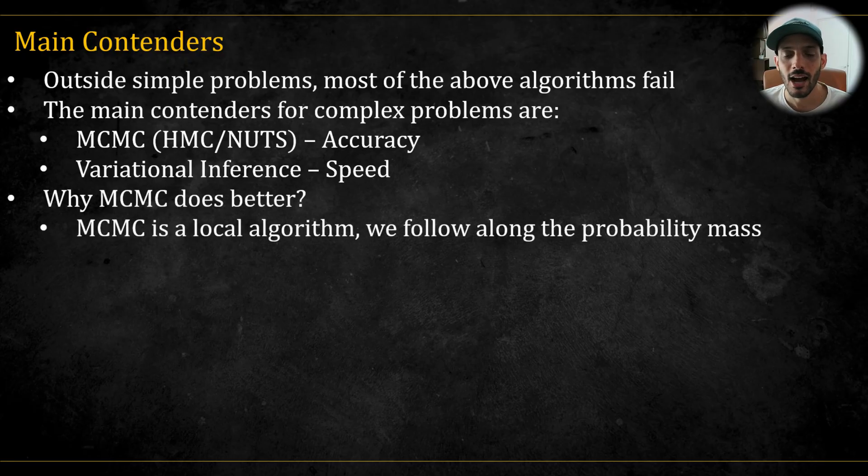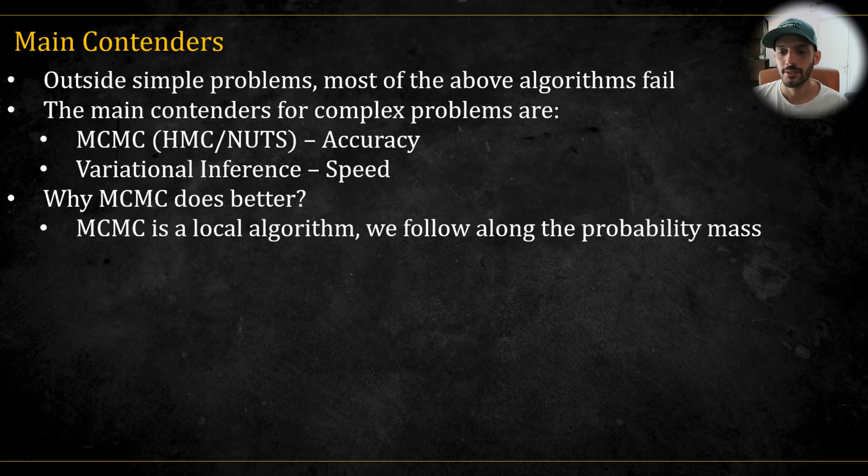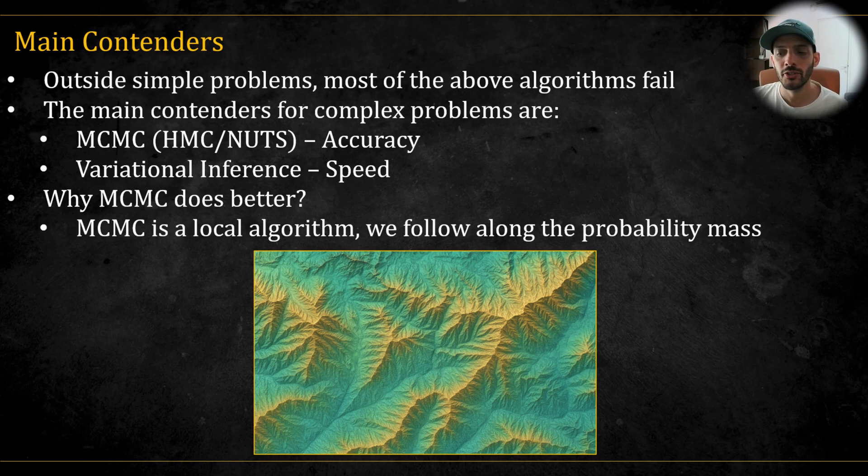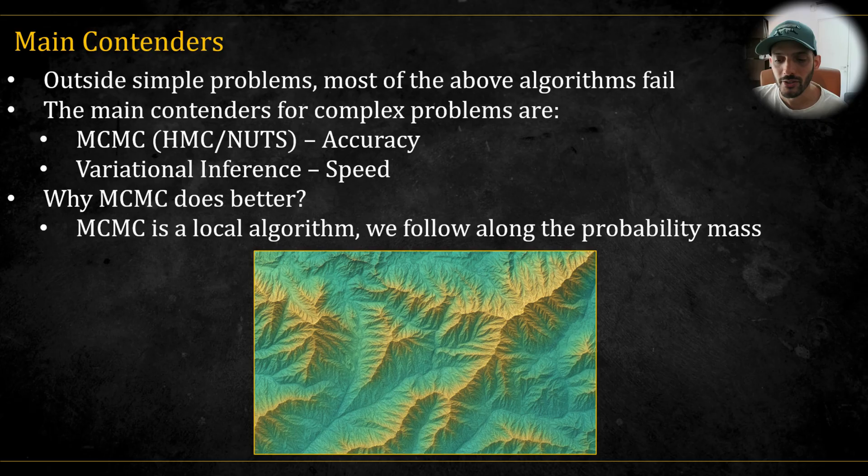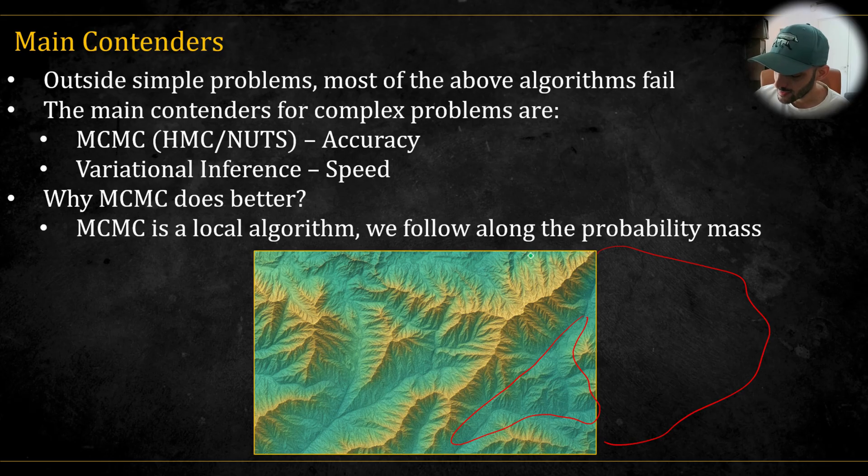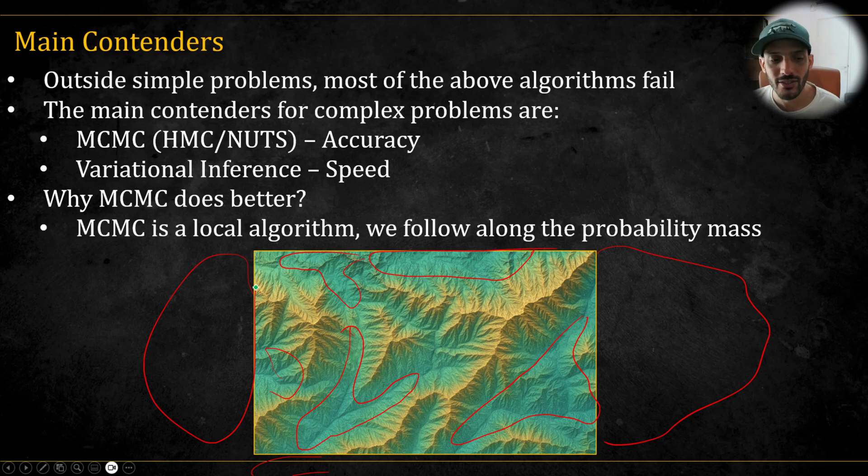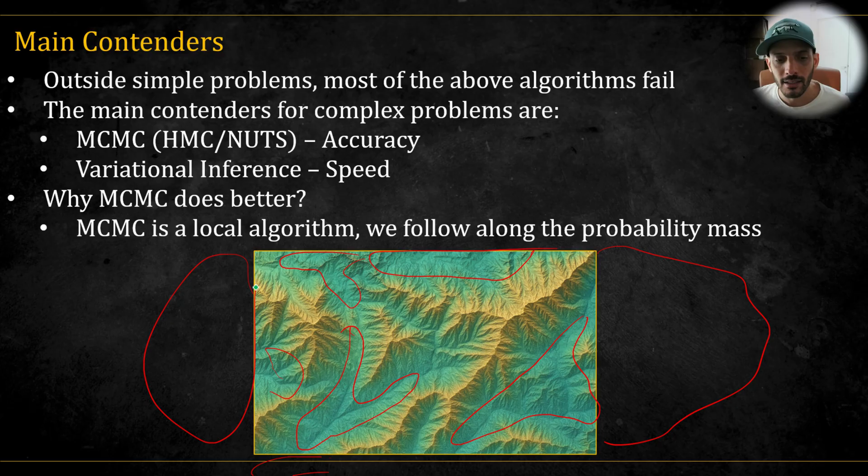Why does MCMC outperform regular Monte Carlo and grid approximation? The key reason MCMC is better is because it's a local algorithm. It follows the probability mass. In many problems, the regions of high probability are narrow and elongated, like mountain ranges. If we applied a global method like grid approximation, we'd waste most of our computation evaluating points in vast regions of very low probability. For example, all of these regions here, and maybe also outside, and these regions, and these regions. There's a lot of regions of low probability. If we simply sample from them globally, we'll be wasting our computational efforts.